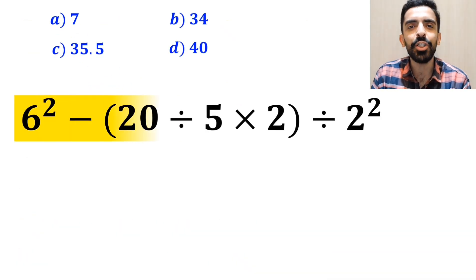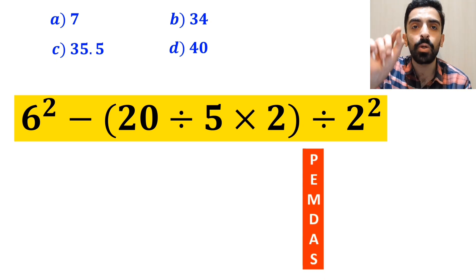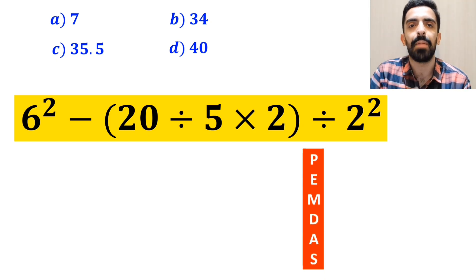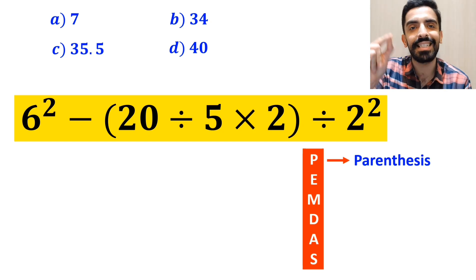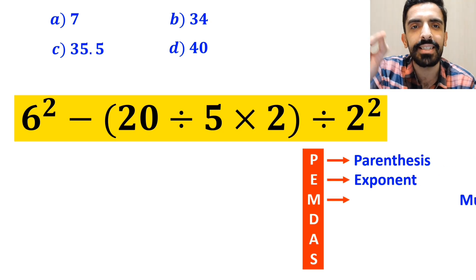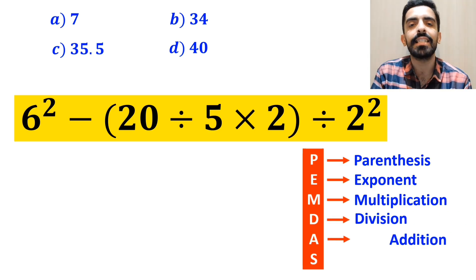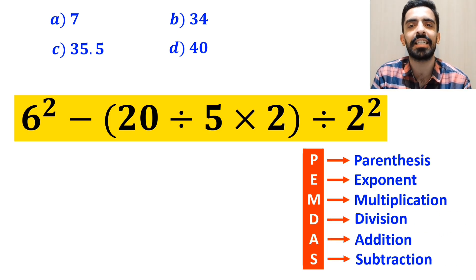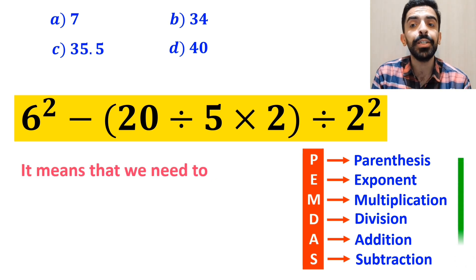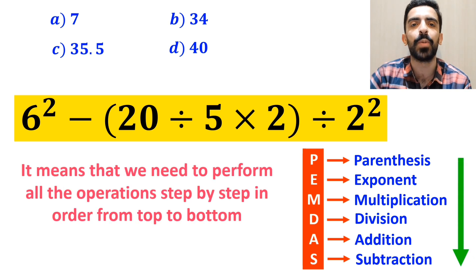Now let me show you how to solve this expression correctly. To solve this question, we must follow the PEMDAS rule step by step. In this rule, P stands for parenthesis, E stands for exponent, M stands for multiplication, D stands for division, A stands for addition, and S stands for subtraction. It means that we need to perform all the operations step by step in order from top to bottom.